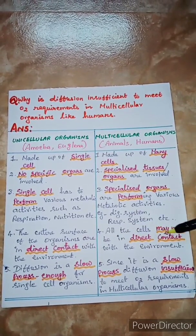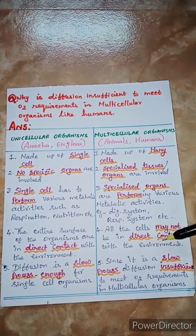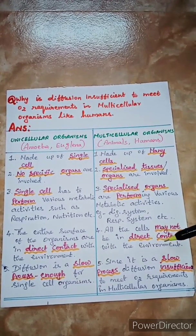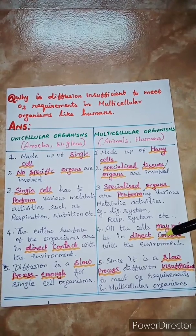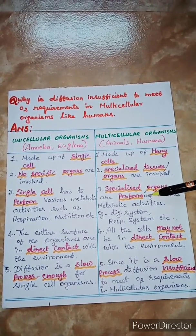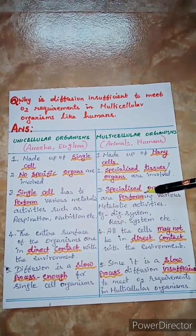And here, all the cells may not contact with the environment directly, they are not contacting because it is made up of many cells. So they are not able to contact directly. That is why it is made up of specialized tissues and organs to carry out the functions.